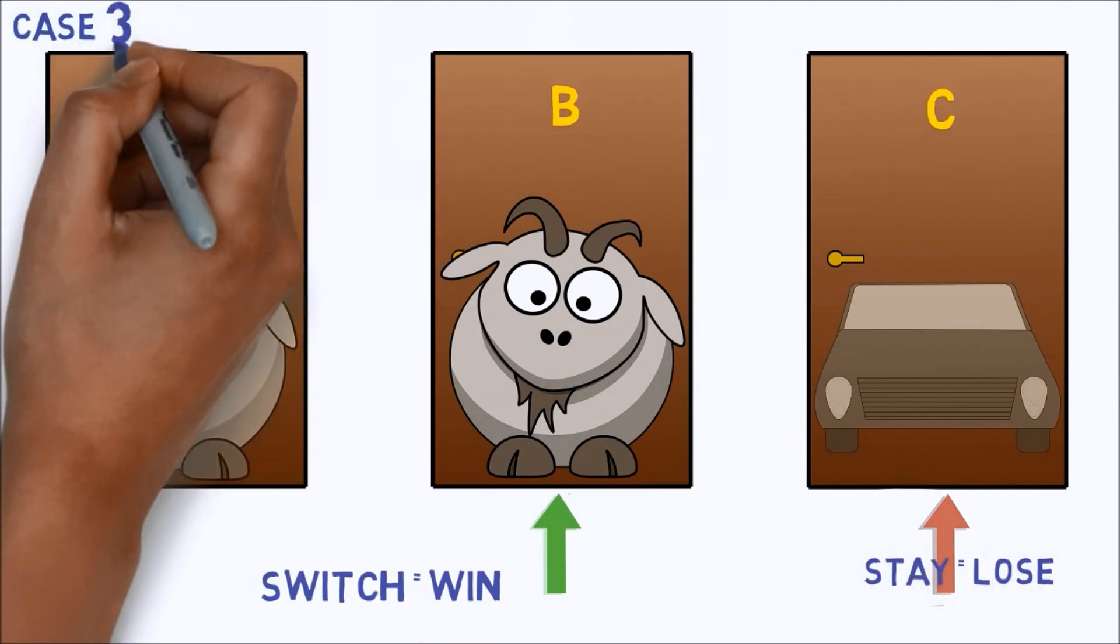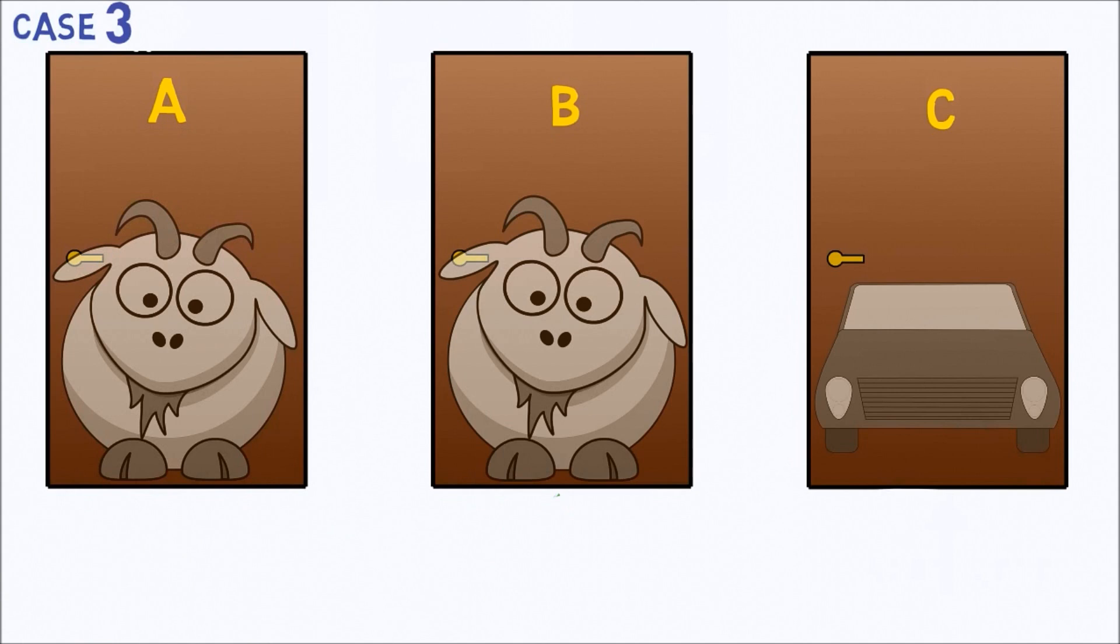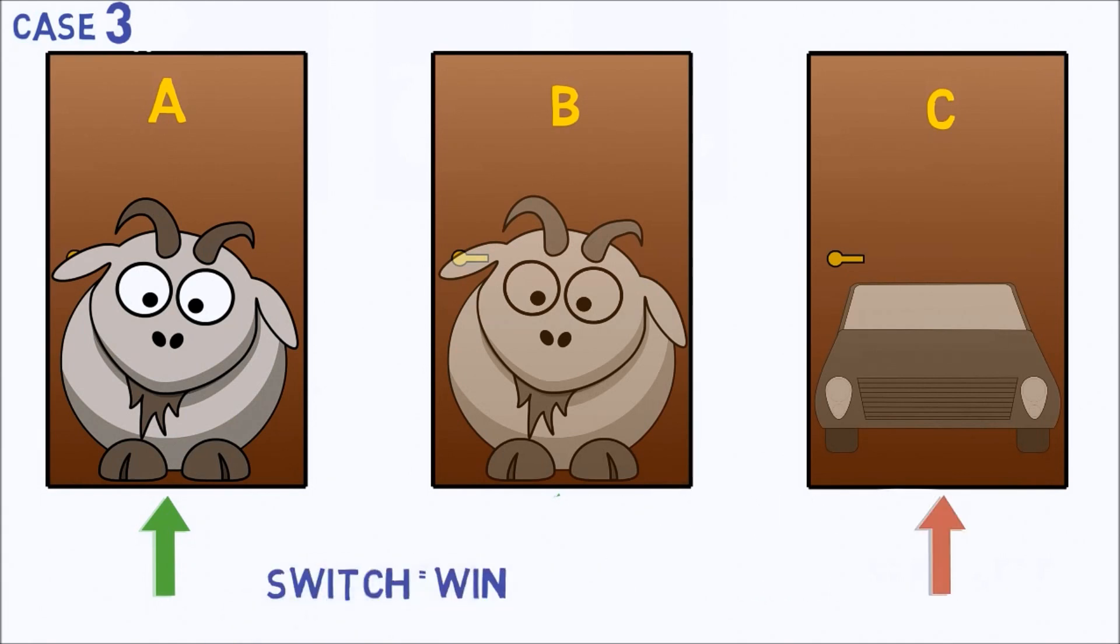Third and the last one, the contestant first chooses door B. He is then shown door A, which has a goat behind it. If he switches to the remaining door, he wins the car. Otherwise, he loses.